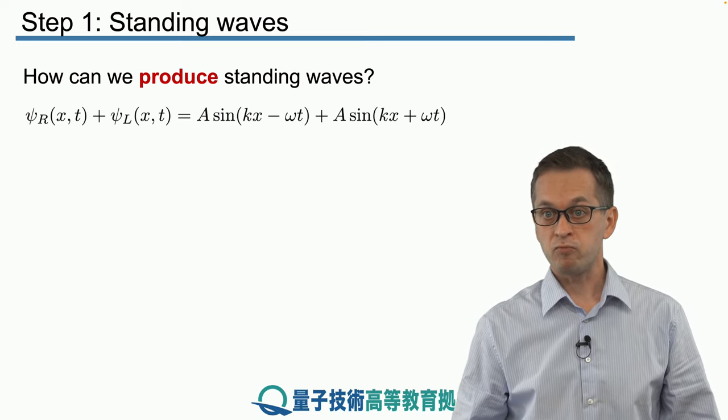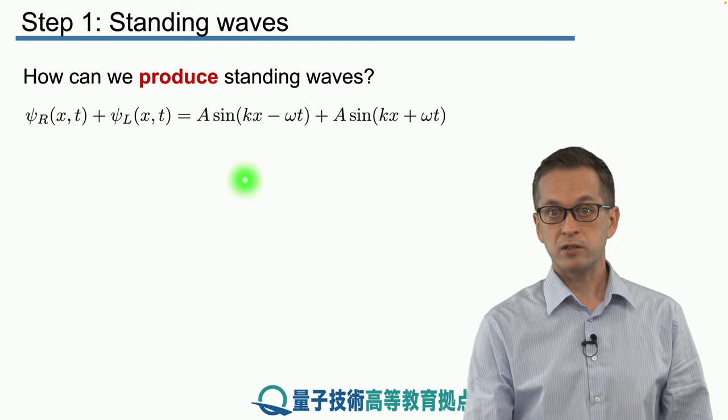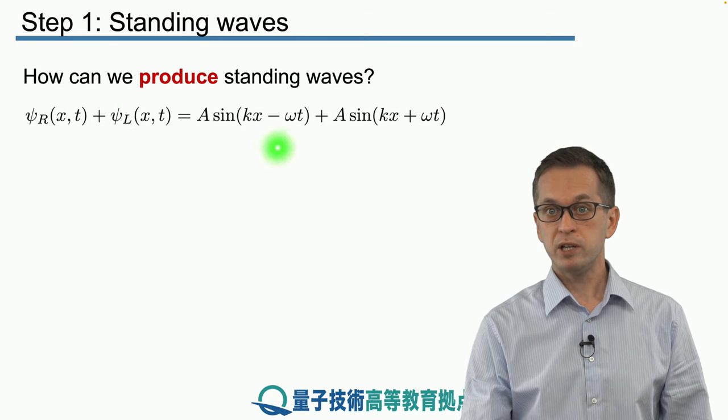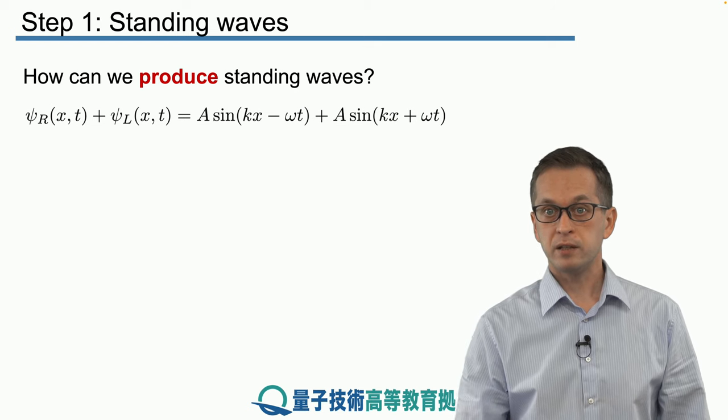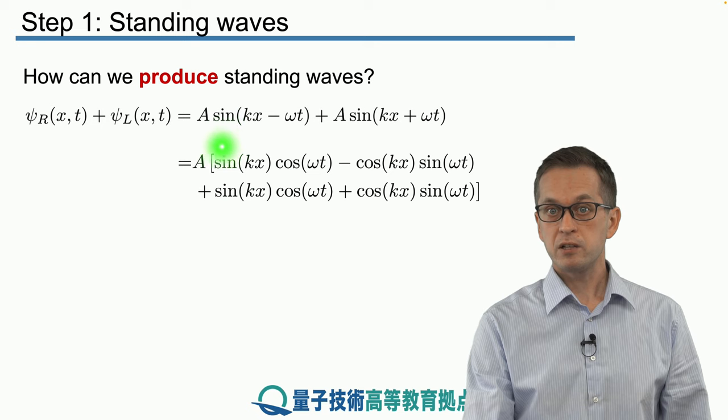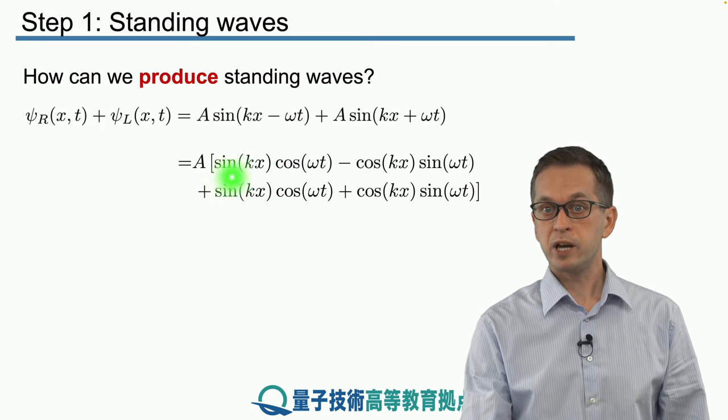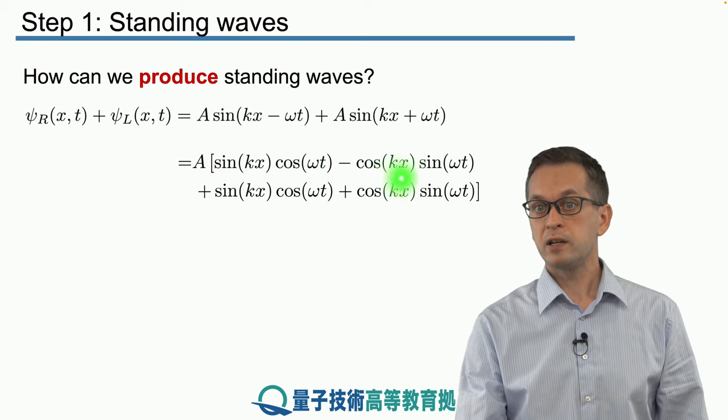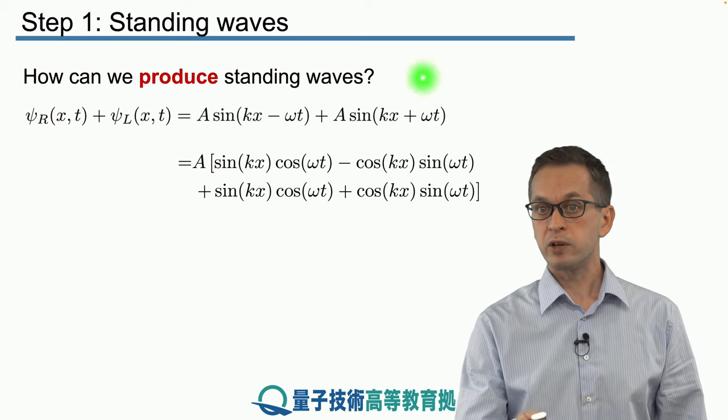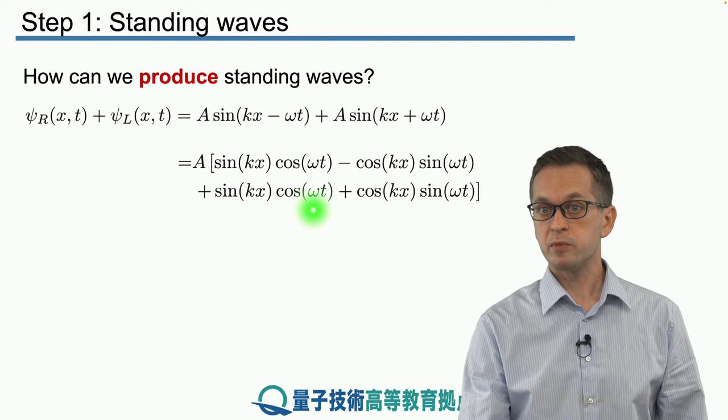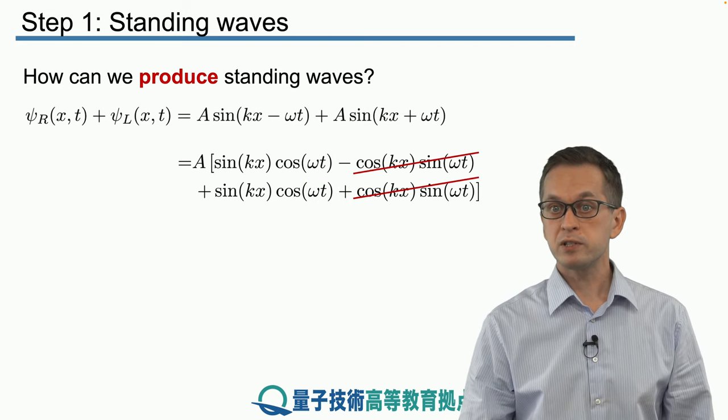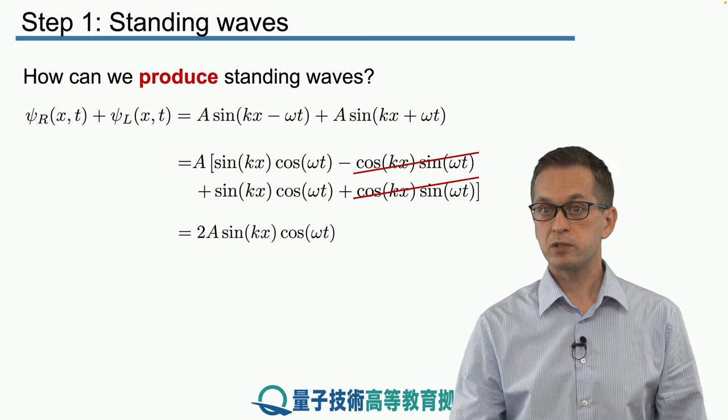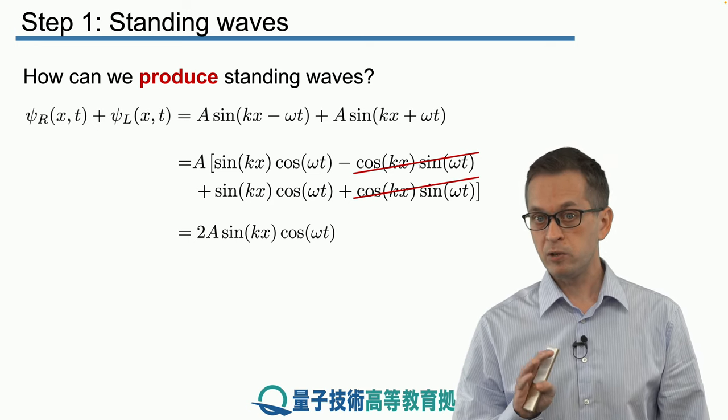Now, how do we actually write this mathematically? Let's just superpose our two waves, our right travelling wave and our left travelling wave. We do a simple sum between them. We expand the sine terms using trigonometric identities. So sine of kx minus omega t becomes sine kx times cosine omega t minus cosine kx sine omega t. Similarly for the left travelling wave, with the only difference being that here instead of a minus we have a plus. The cosine kx terms cancel and what we get is 2A times sine kx cosine omega t.